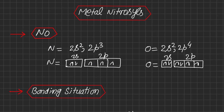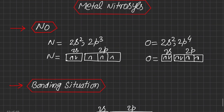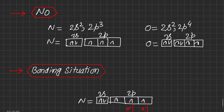In the previous lectures we discussed metal carbonyls and considered carbon monoxide as a very strong ligand which may complex with metal. Similarly, nitrosyl (NO) is also a strong field ligand and makes a very stable complex with metals. These complexes are called metal nitrosyls. Just like carbonyl, we will see what is happening in this nitrosyl or NO.